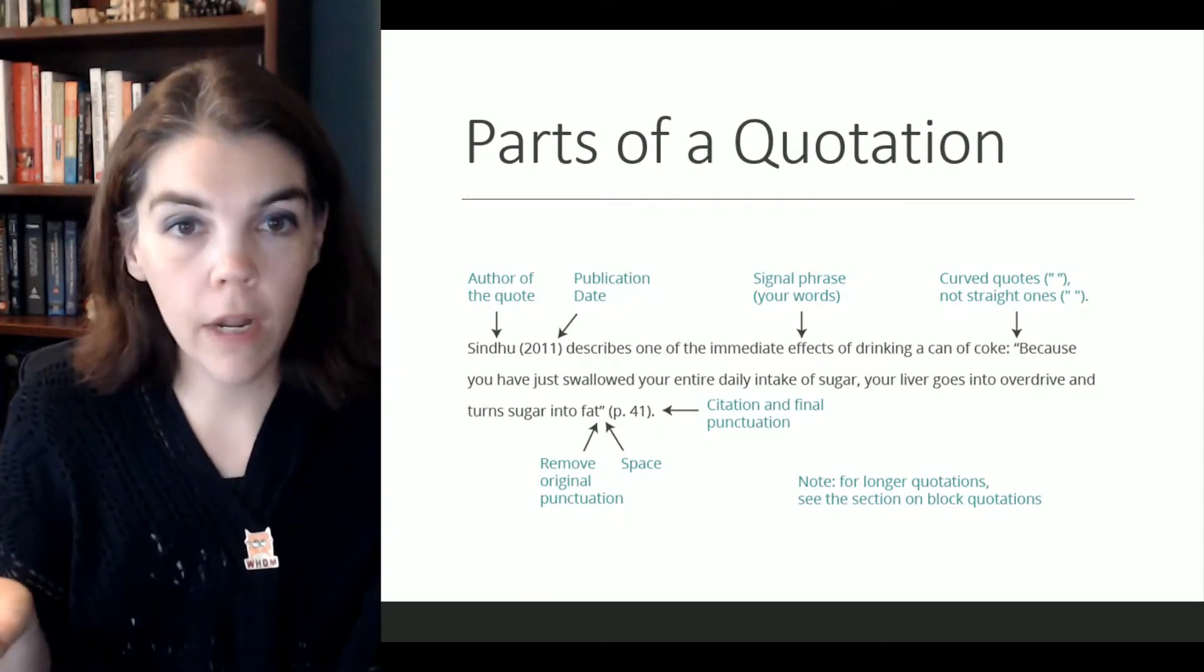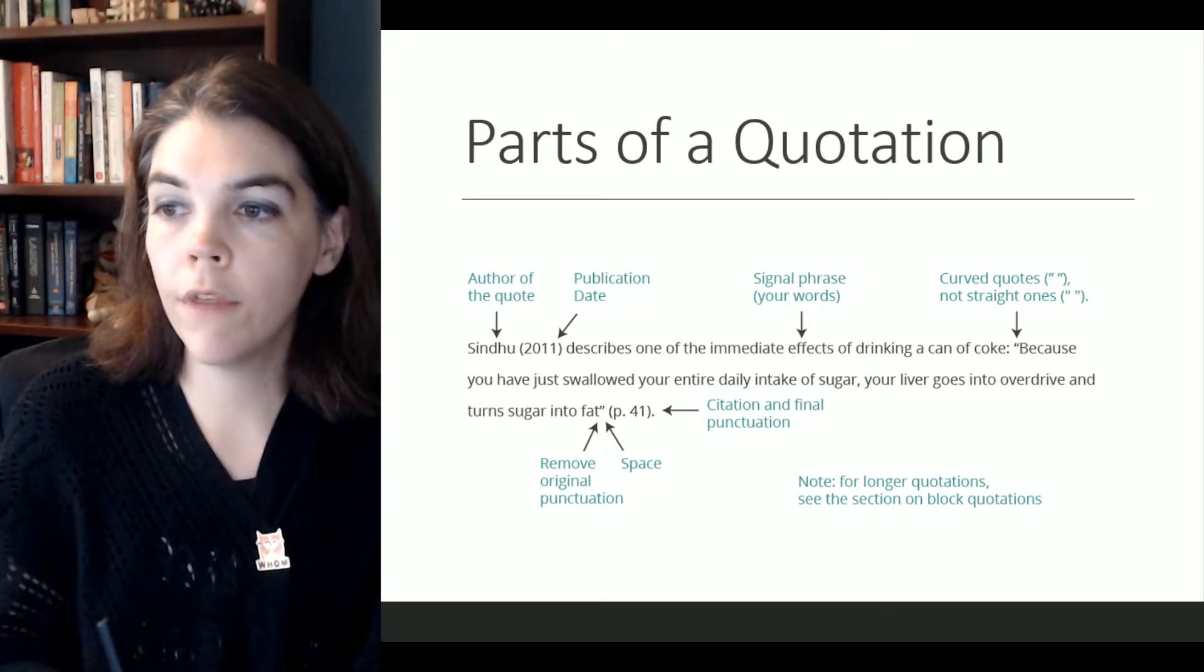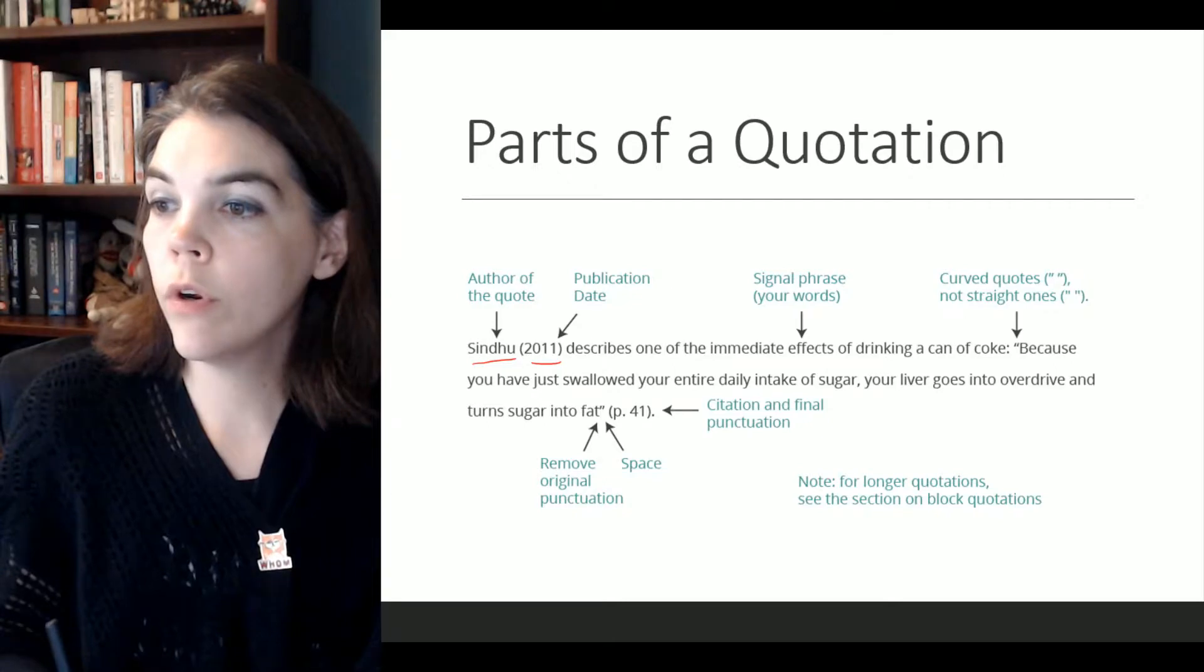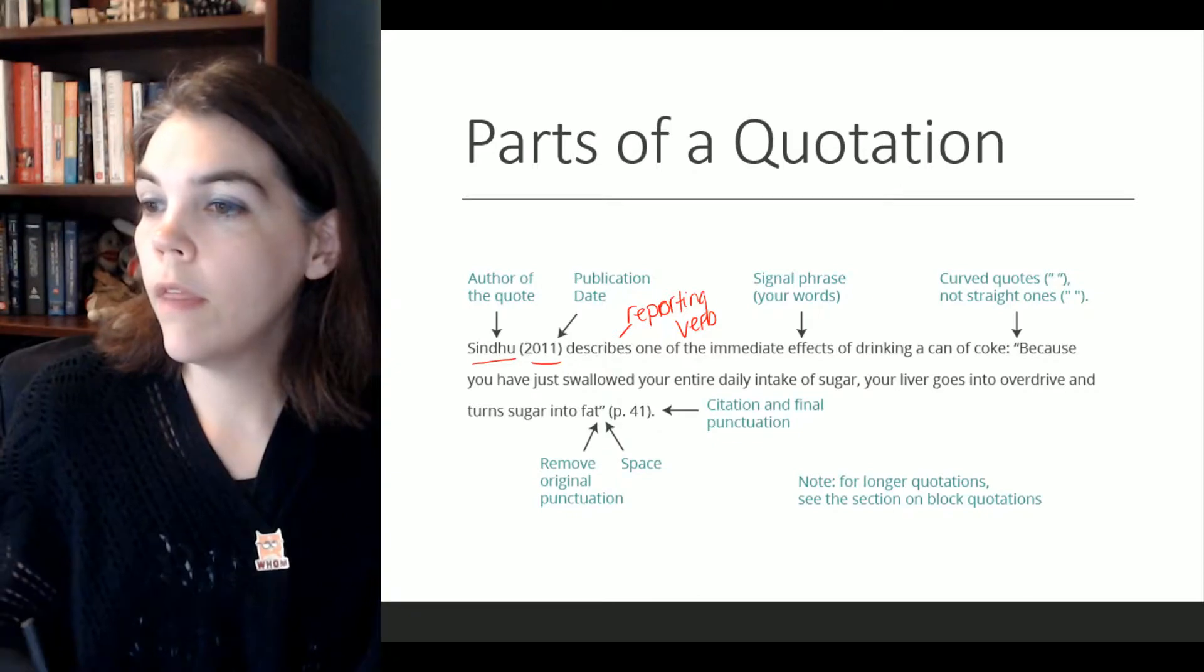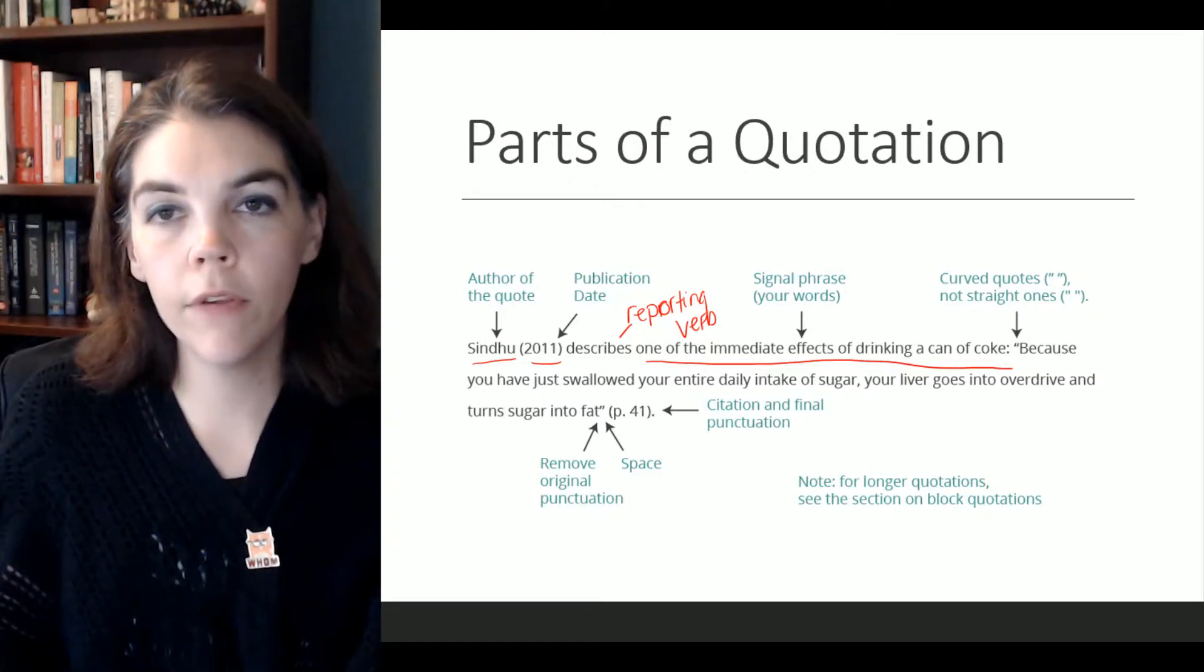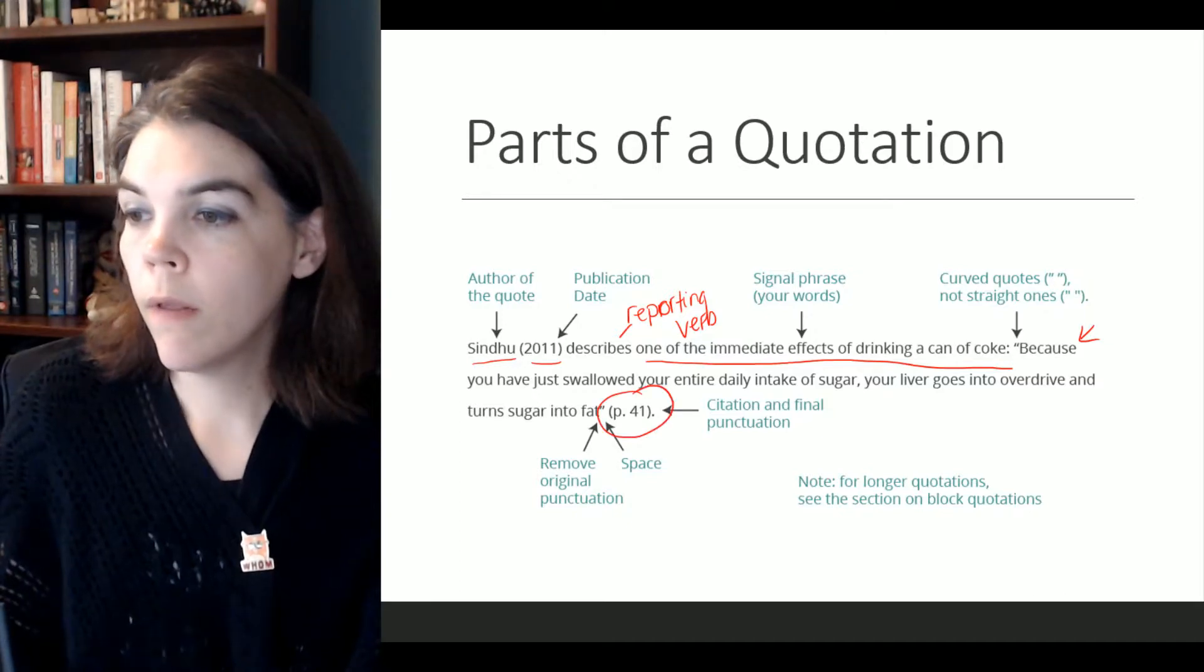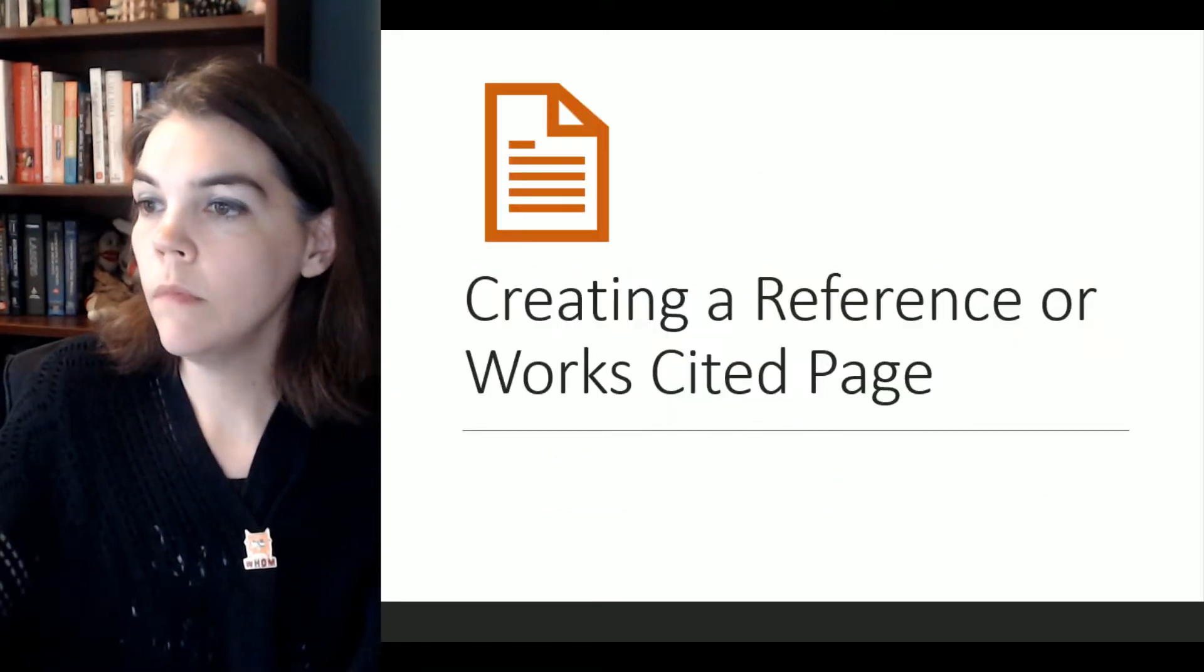This is another example that I found on Creative Commons that shows the part of a quotation. Again, you have your author, you have your date, then your words. I'm gonna mark this as our reporting verb. This part here is kind of like a summary of what the source was saying. And then we have our quote. And we have our page number there, our period here, and no period here.